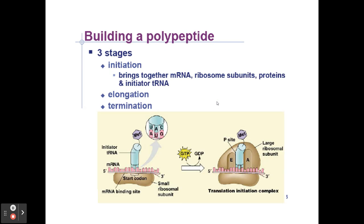Building a polypeptide has three stages: initiation, elongation, and termination. In initiation, the messenger RNA and its start codon bind to the small ribosomal subunit. An initiator transfer RNA carrying methionine binds to it. Then the large ribosomal subunit binds to the small one, forming a functional ribosome.